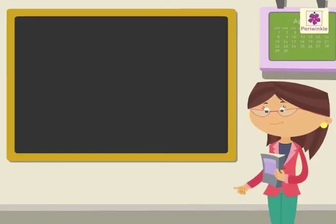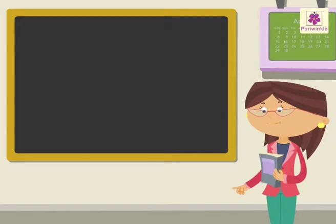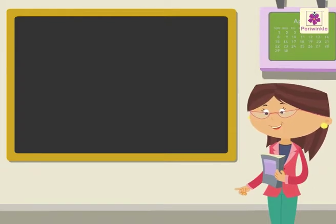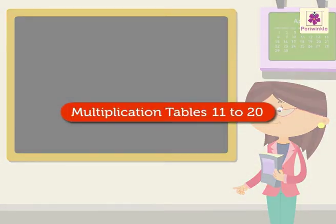We have already revised tables from 1 to 10. Today let us study the multiplication tables from 11 to 20.